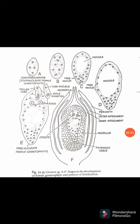The pollen tube, with two male gametes inside along with the tube nucleus, pierces through toward the female gametophyte. More than one pollen tube carrying male gametes may enter the female gametophyte. As seen clearly in figure E, two pollen tube nuclei are trying to enter, piercing through the cells of the female gametophyte.